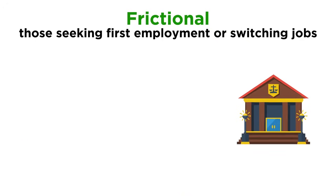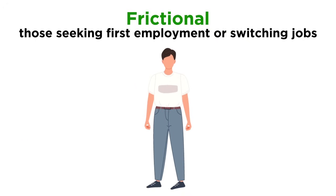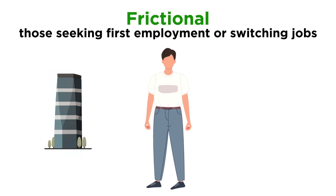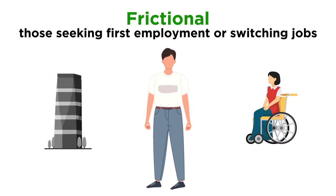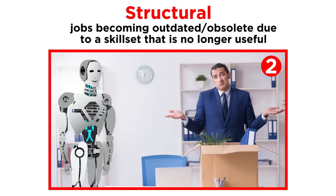Another example might be someone who had to quit their job to take care of someone else. Consider Vince. Vince left his sales job two years ago to care for his mother who has a severe disability, but now he is attempting to return to the workforce. Structural unemployment refers to jobs becoming outdated or obsolete due to a company or industry no longer requiring a particular skill set. Structural unemployment occurs when a worker's skills simply don't match the skills needed for the jobs available.